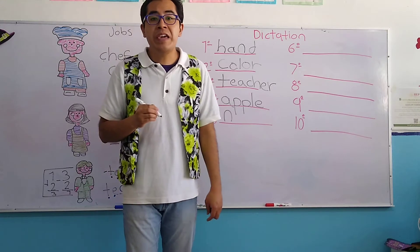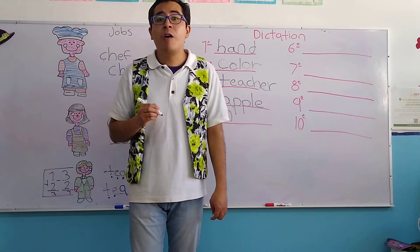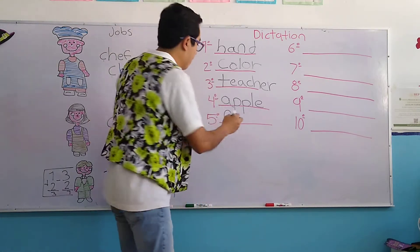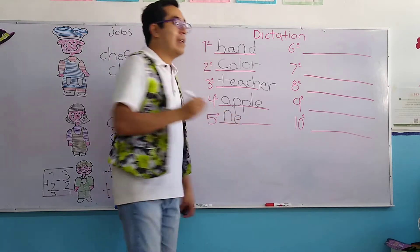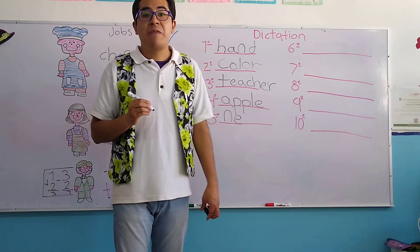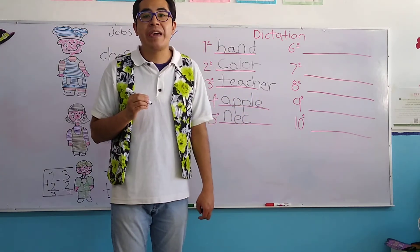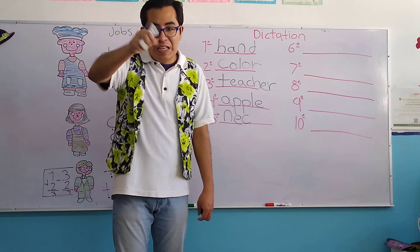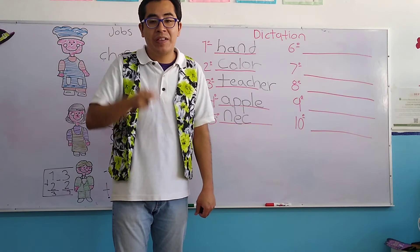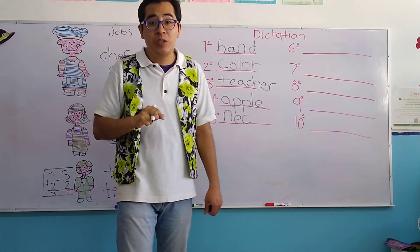Letter E of Elephant of Enrique. Letter C of Carlos. And letter K of Key. Do you remember what is a key? It's an object to open the door.